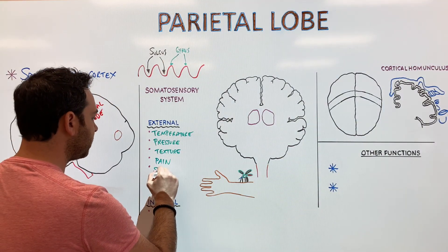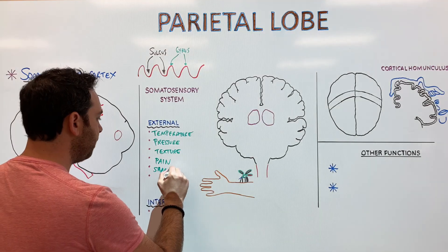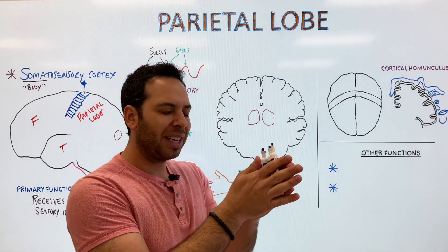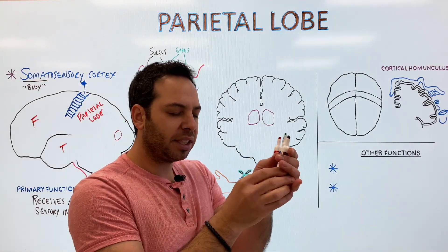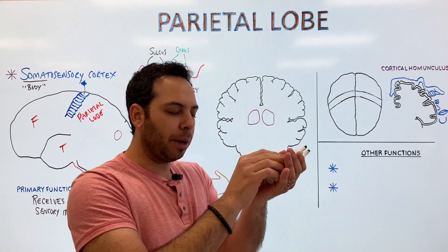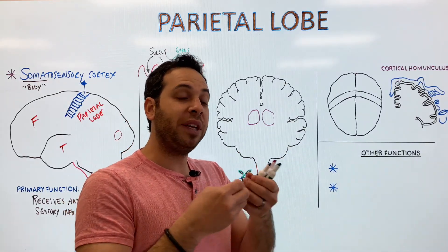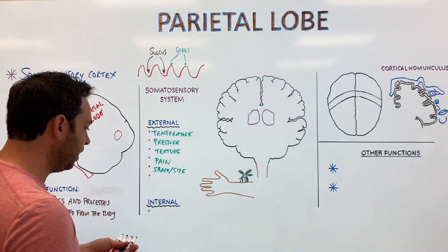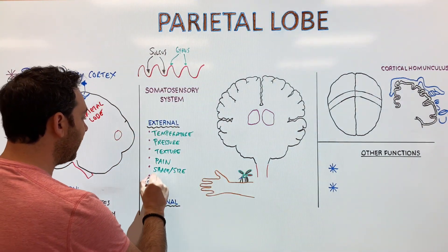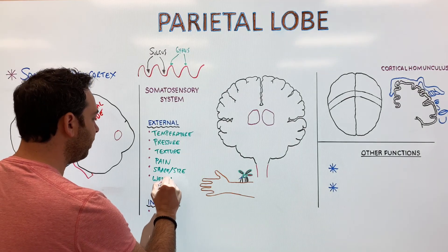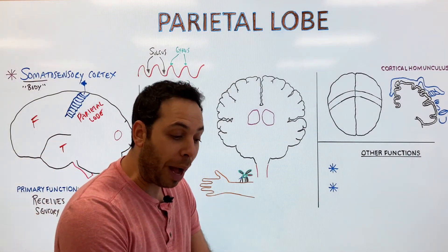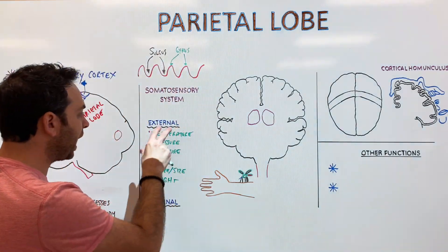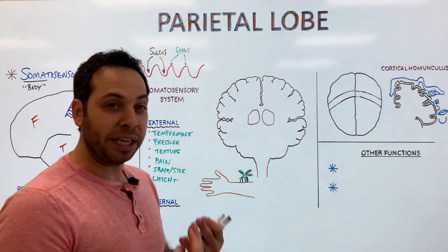External sensory inputs also include shape and size — for example, holding a marker with your eyes closed, you can feel how smooth it is, how much it weighs, and connect that to memory to identify the object. The somatosensory cortex also picks up weight, helping you know how hard to lift something heavy.